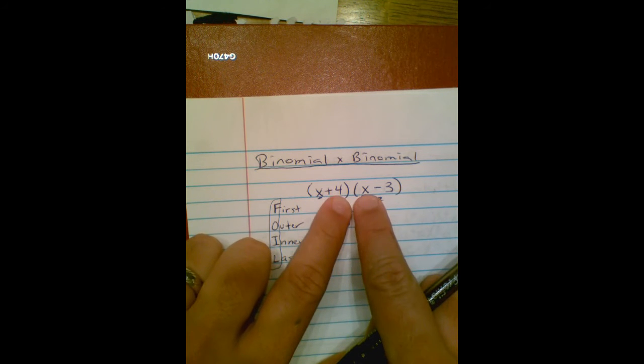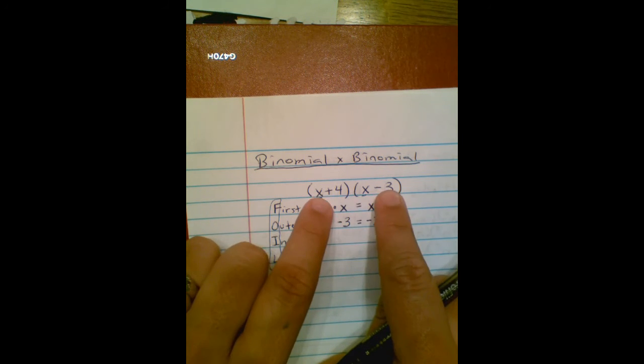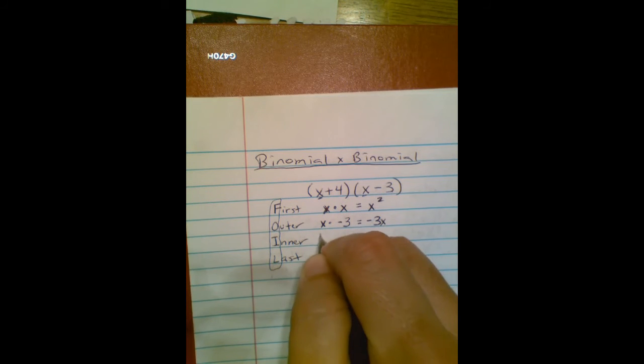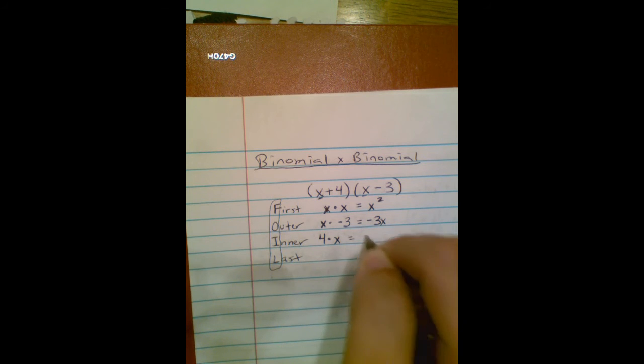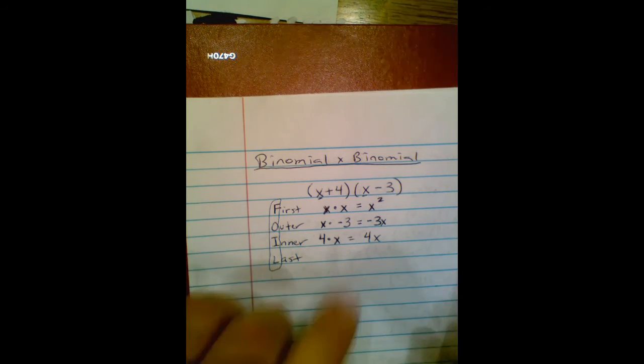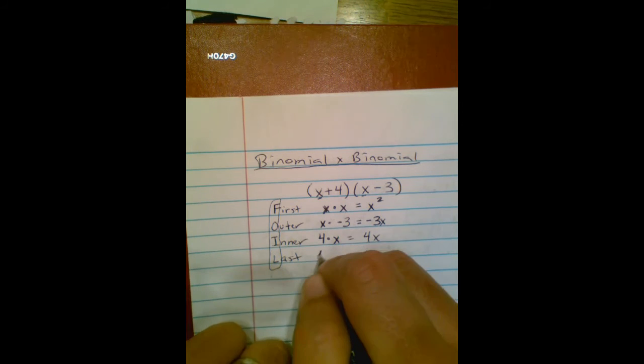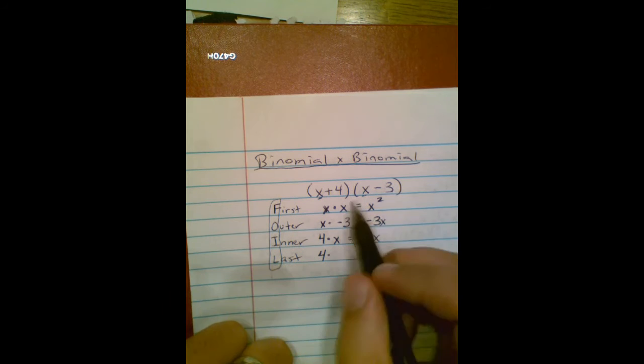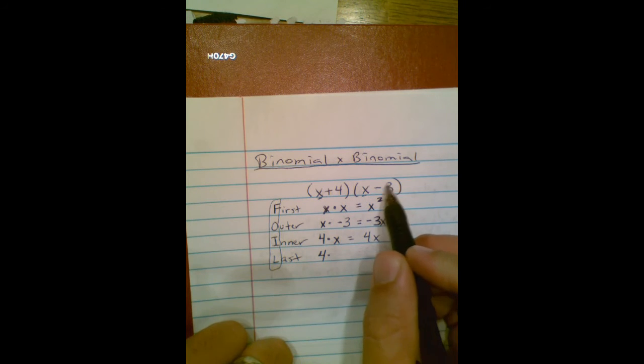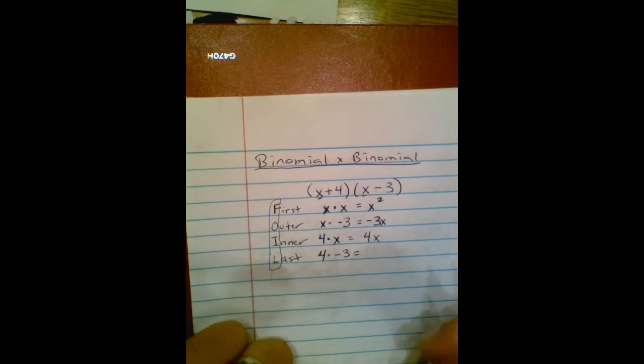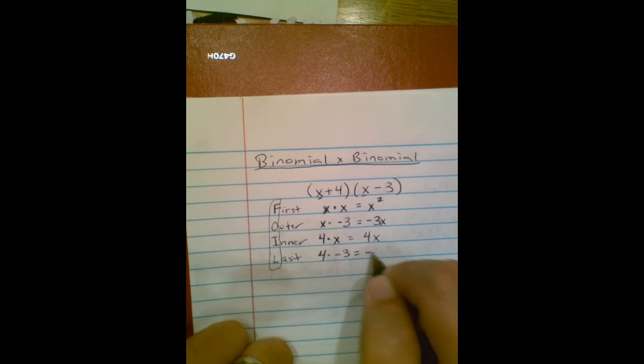Make sure you keep the signs with these. So positive 4 times x. I've got 4 times x, which is 4x. And then my last term. The last term in the first parentheses is positive 4. The last term in the second parentheses is negative 3. So I've got 4 times negative 3, which is negative 12.